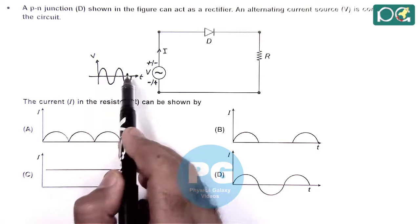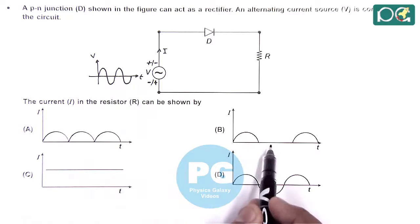So most appropriate curve will be matching with the option B because it is behaving like a half wave rectifier.